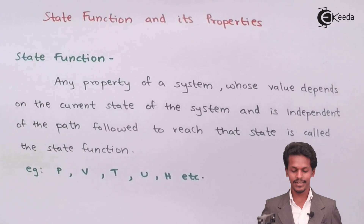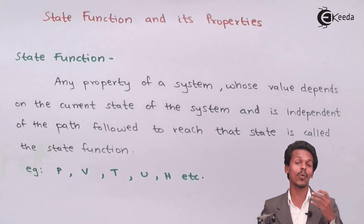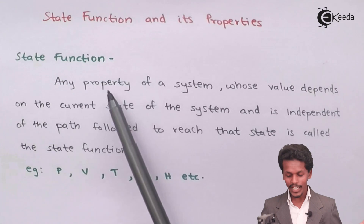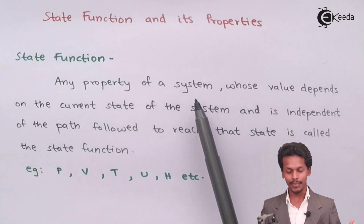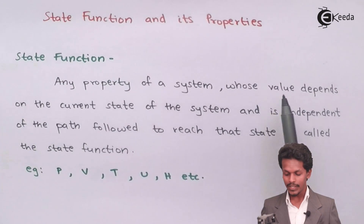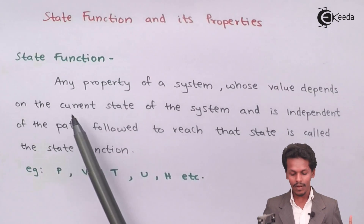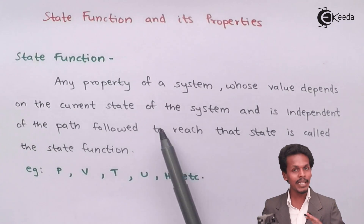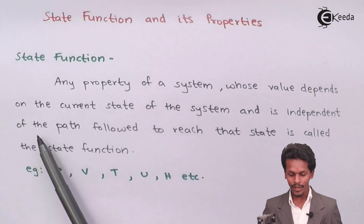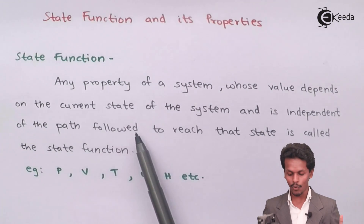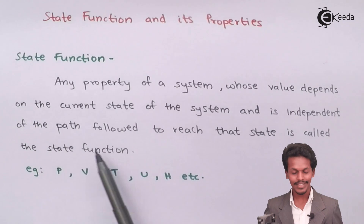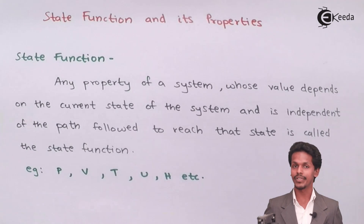Talking about the state function — any property of a system whose value depends on the current state of the system and is independent of the path followed to reach that state is called a state function.